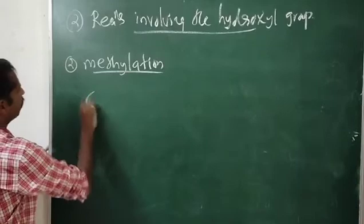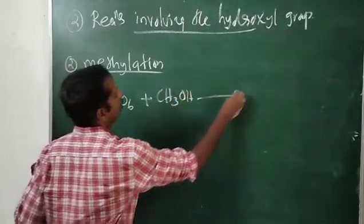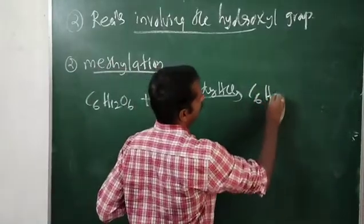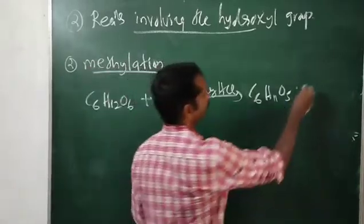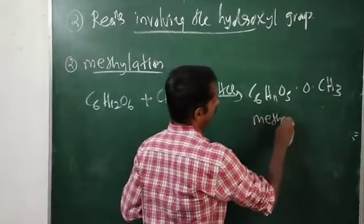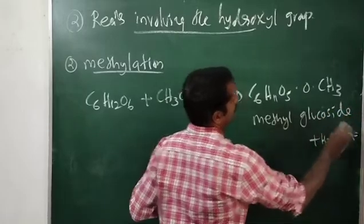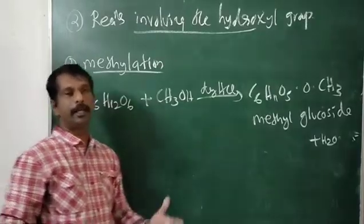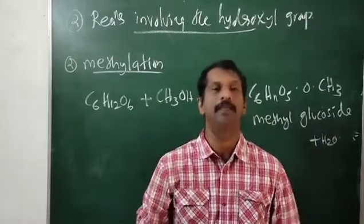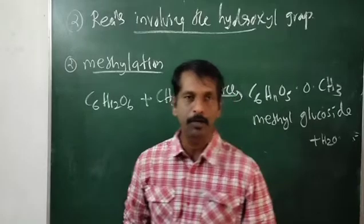Second reaction: methylation. Glucose (C6H12O6) in reaction with methyl alcohol in the presence of dry HCl gives a compound C6H11O5-OCH3, known as methyl glucoside, plus H2O. In these two reactions — acetylation and methylation — the hydroxyl groups present in glucose are involved. The other four reactions involved the aldehyde group. Thank you, we will continue in the next class.